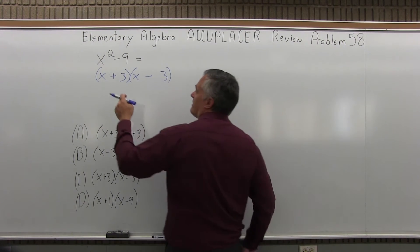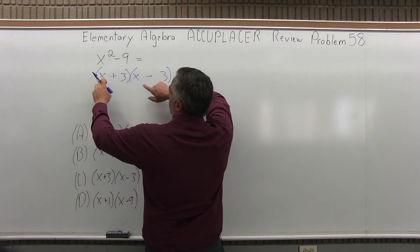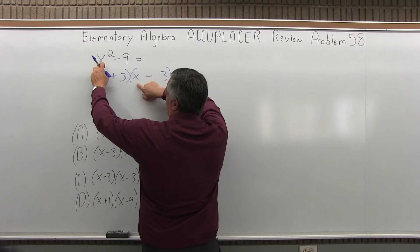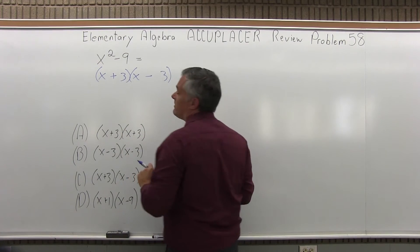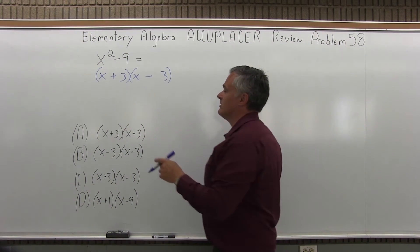Now, it works this way because when you foil it, you're only getting the first thing that's squared and the second thing that's squared with a negative, and the in-between parts of your foil just cancel out.